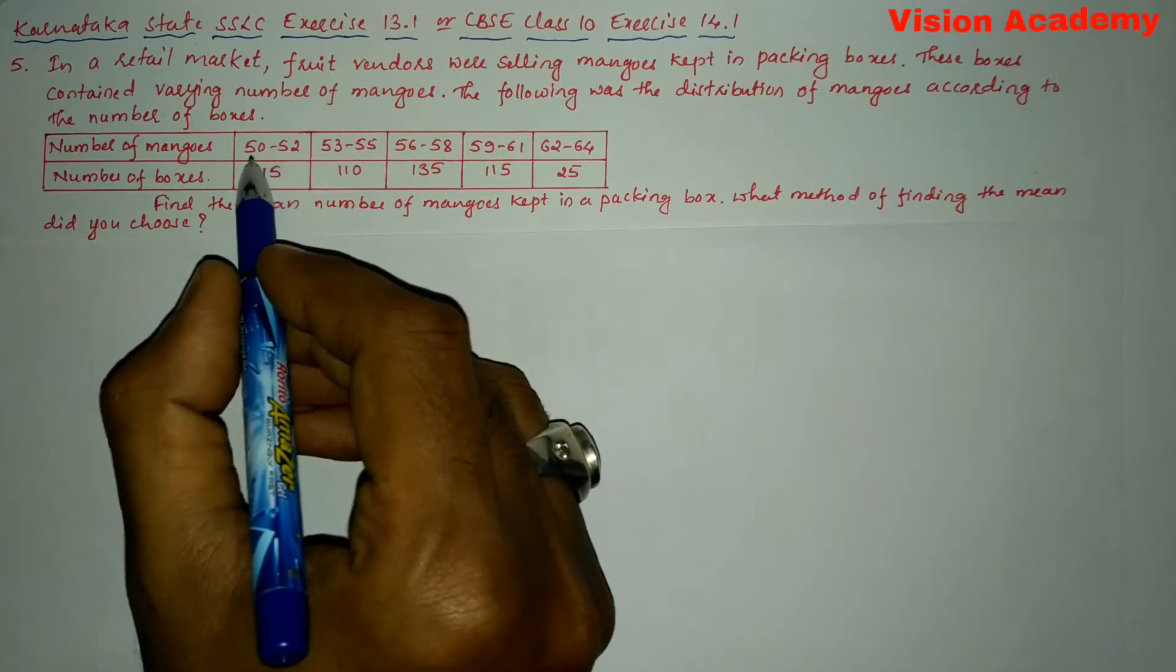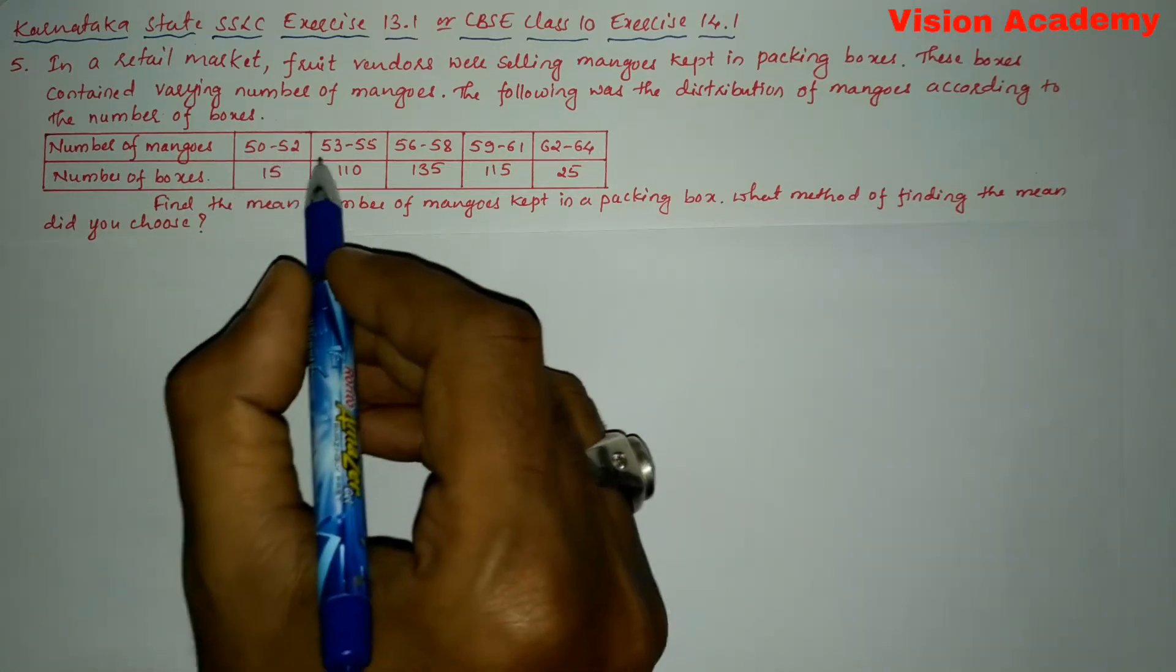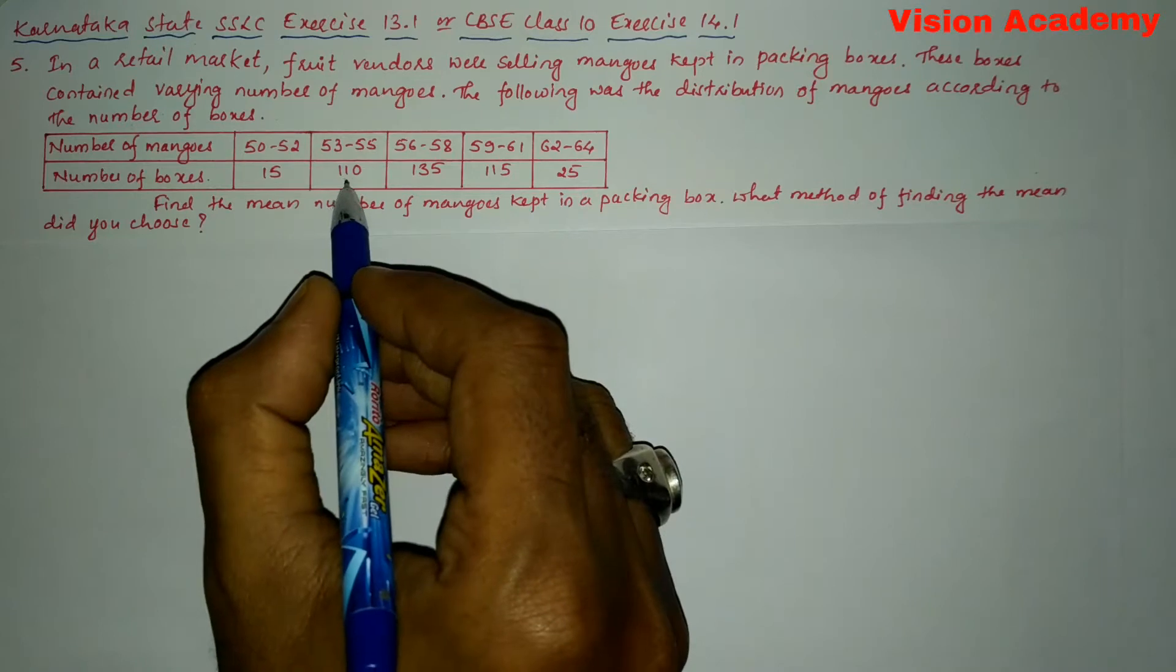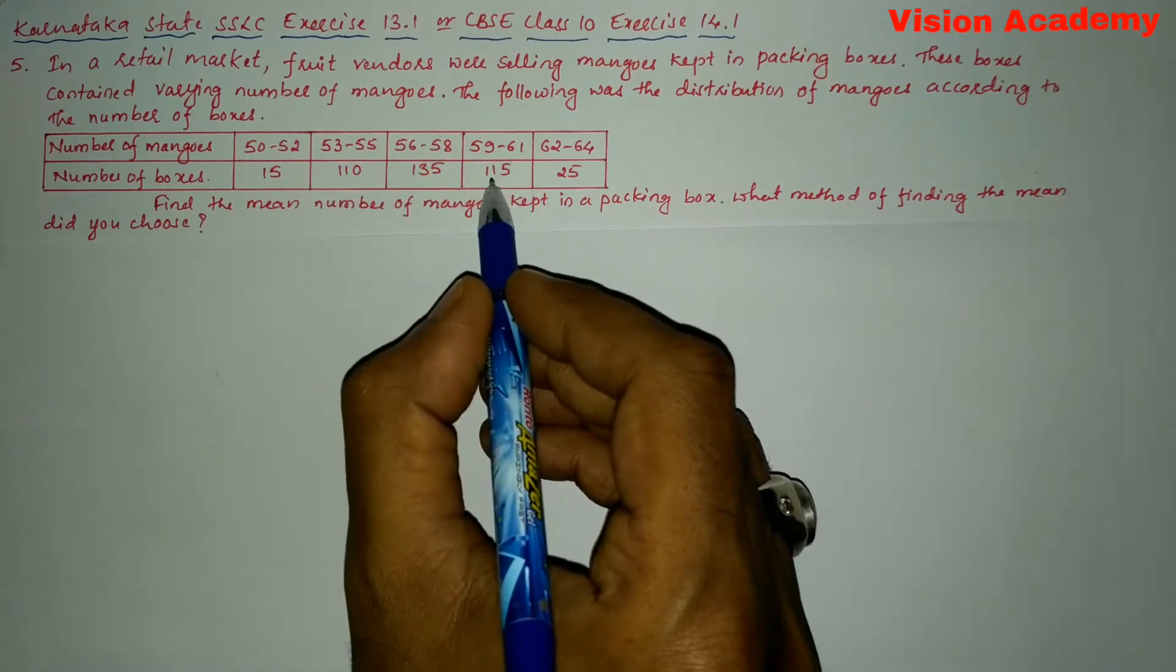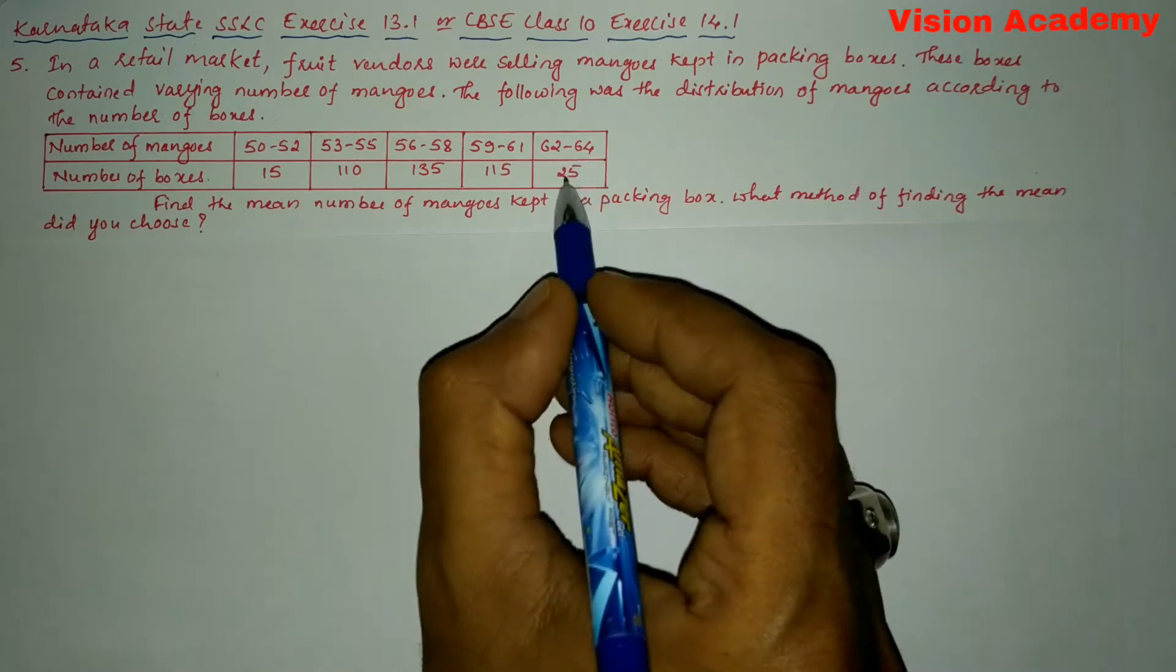Number of mangoes, number of boxes. So here number of mangoes ranging from 50 to 52, 15 boxes; 53 to 55, 110 boxes; 56 to 58, 135 boxes; 59 to 61, 115 boxes; 62 to 64, 25 boxes.